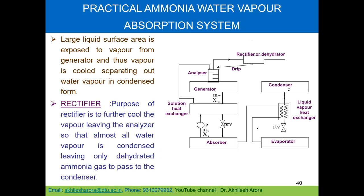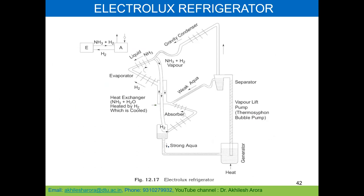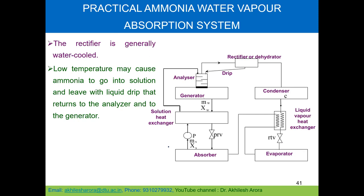The purpose of the rectifier is to further cool the vapor leaving the analyzer. Cooling causes water vapors to condense first; this condensed water flows back to the analyzer as liquid drip. The cooled vapor leaving the rectifier is thus almost completely dehydrated ammonia gas, which passes to the condenser. The rectifier is generally water-cooled. Excessively low temperature may cause ammonia to go into solution and return with the liquid drip to the analyzer and generator.